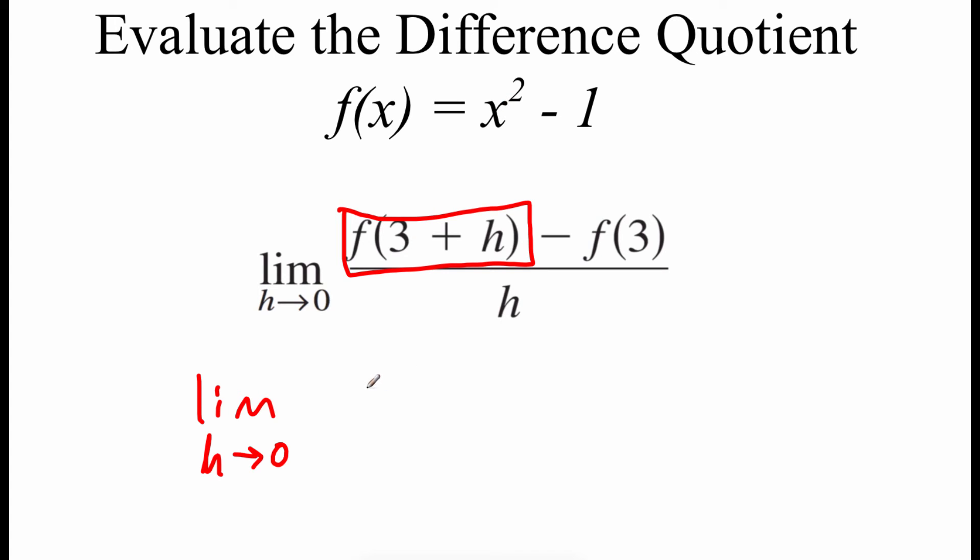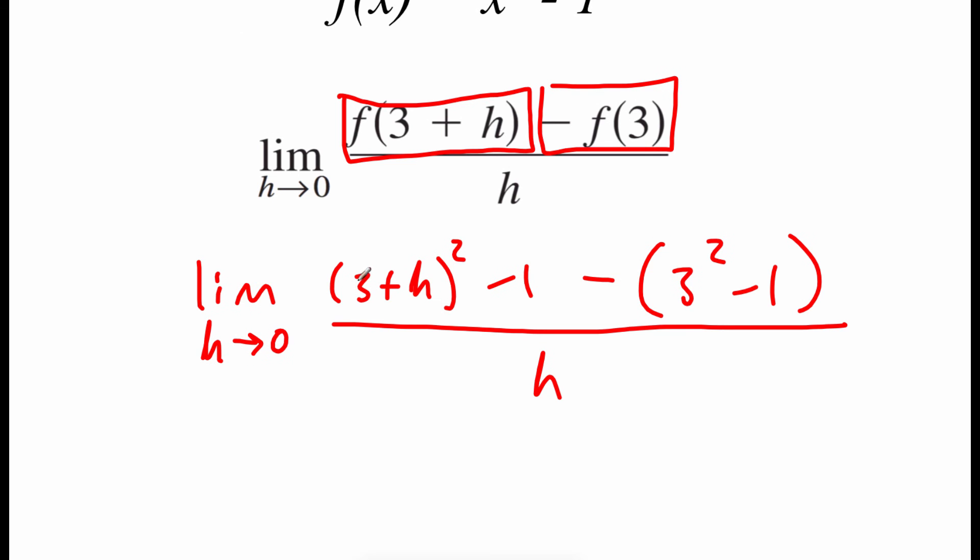So then the first part of this difference quotient will say 3 plus h squared minus 1. And then on this second piece we've got minus f of 3. So we're going to subtract off and now we have to plug in 3 for this function. So 3 squared minus 1. And then on bottom we've just got h. Now with this 3 plus h in parentheses squared, we're going to have to foil that out and combine some like terms. When we do that we should get 9 plus 6h plus h squared. And then we still have this minus 1. If we look at simplifying the second piece down, well 3 squared is 9 and 9 minus 1 is 8. So we've got minus 8 on the end.